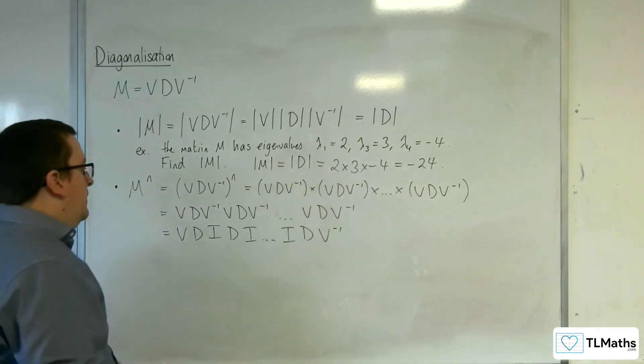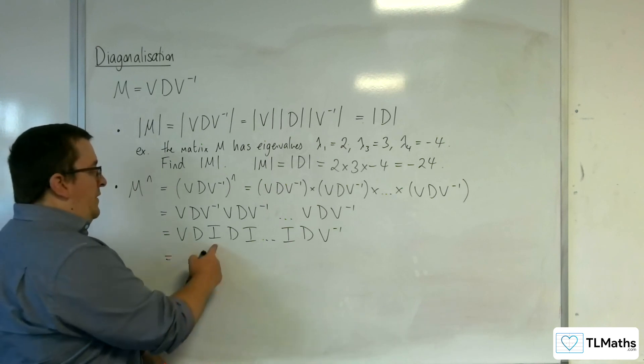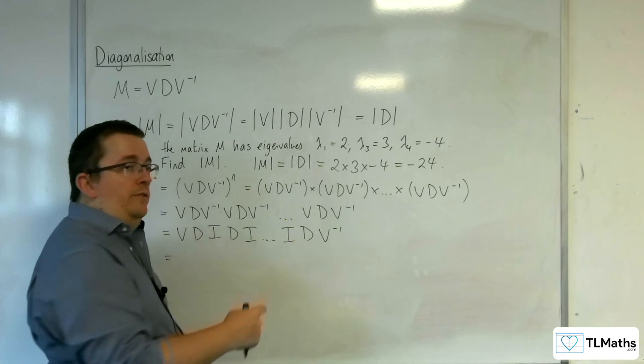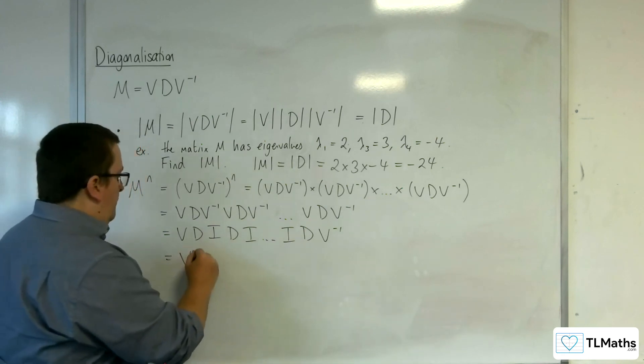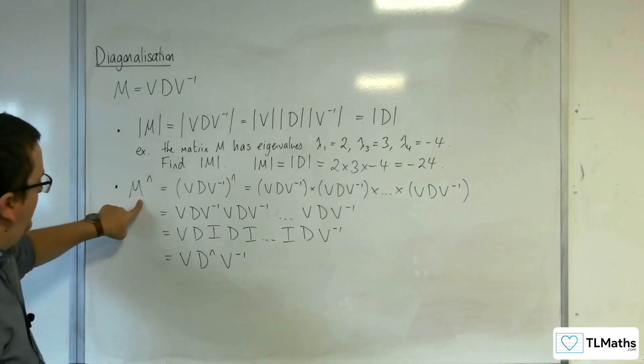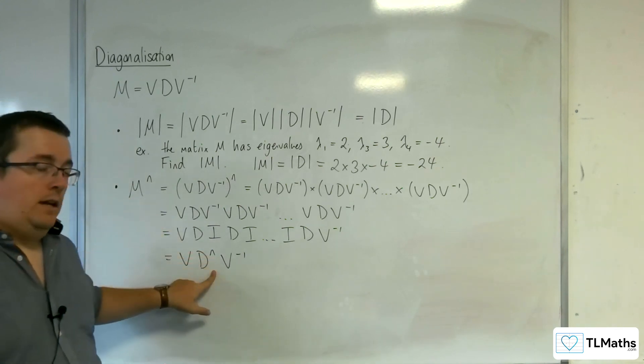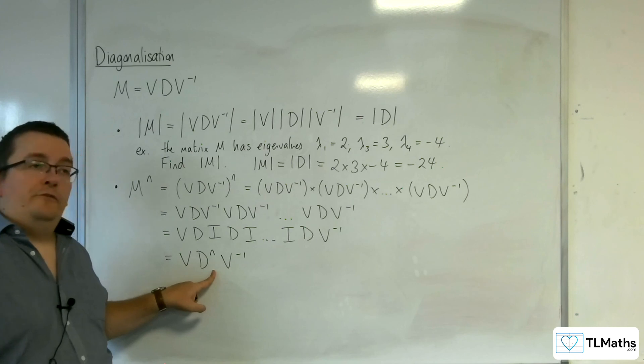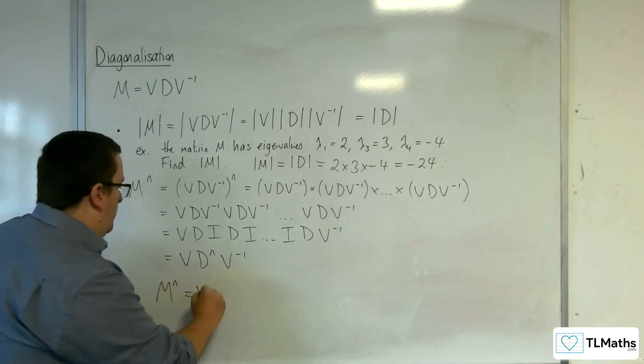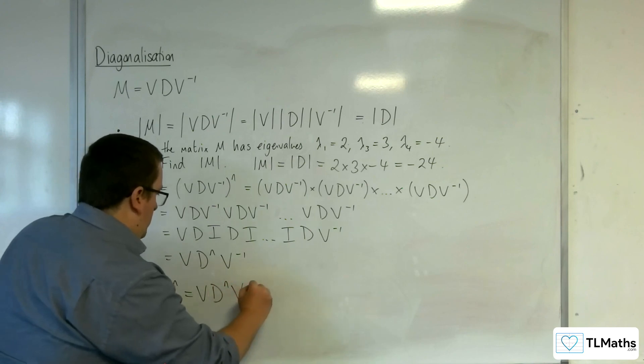So with the identity matrix in there, what you've actually got is D multiplied by itself N times. So V D to the N, V minus 1. So actually, M to the N is V D to the N, V minus 1. And that's a very useful and important property that you need to be aware of.